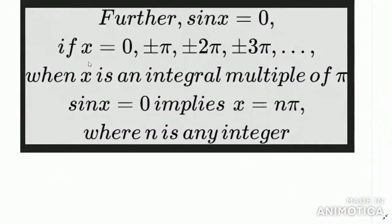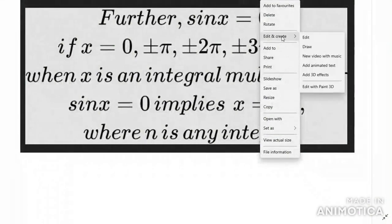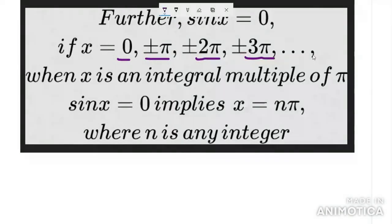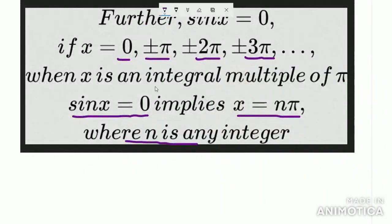Now, recall that sin x = 0. When does sin x become 0? When x equals 0, π, 2π, 3π, 4π, and also −π, −2π, and so on. That is, when x is an integral multiple of π, sin x = 0. So sin x = 0 for all x = nπ, where n is any integer. Remember this result; it will be used to solve questions.